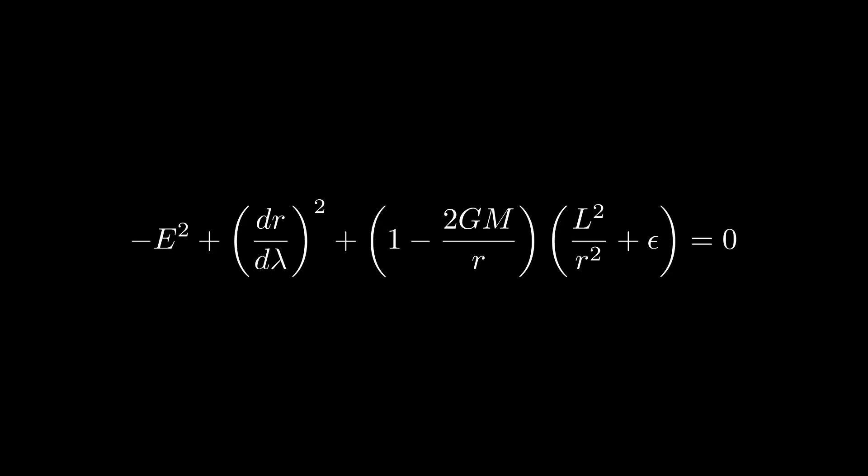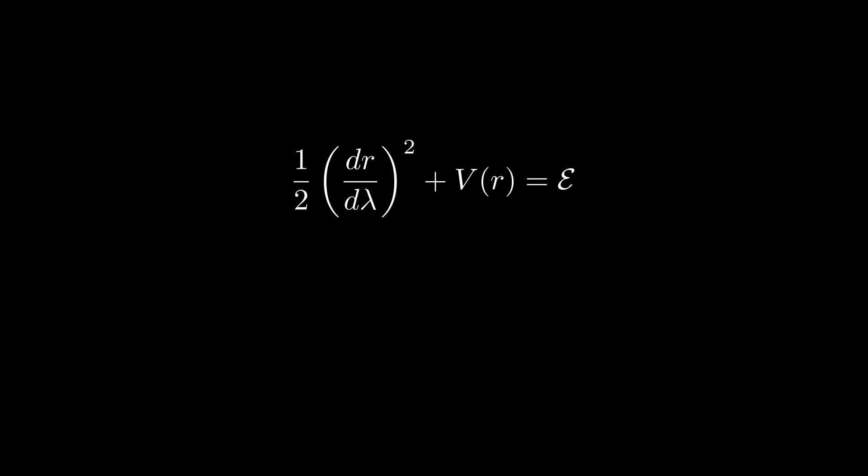Now we can recognize something. If we slightly rewrite this equation by multiplying by half, taking the E to the other side, and multiplying out the brackets, this looks like we have a radial kinetic energy term, a potential energy term, and a total energy term. Let us examine the potential. The first term is just a constant. This won't matter too much. The second term is just the standard gravitational potential in Newtonian gravity. The third term is the centrifugal term. The fourth term is the contribution from general relativity.